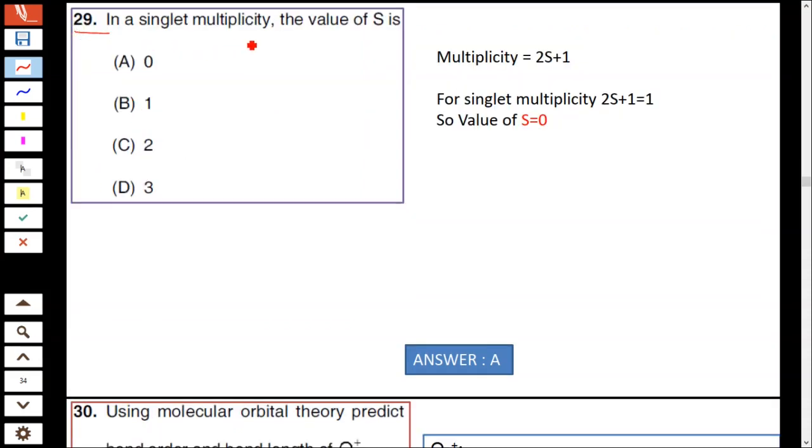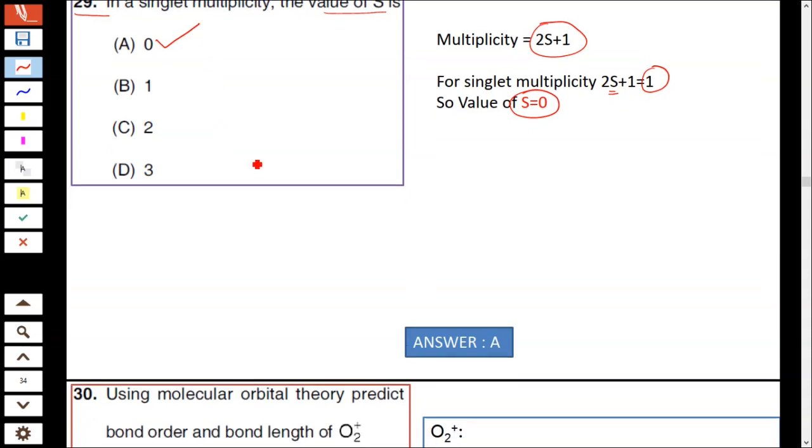Question number 29: In a singlet multiplicity, the value of S is—multiplicity is given as 2S+1. For singlet multiplicity, S = 0. When you put S = 0, 2 × 0 + 1 = 1. Hence option A is correct: S value is 0 for a singlet multiplicity.